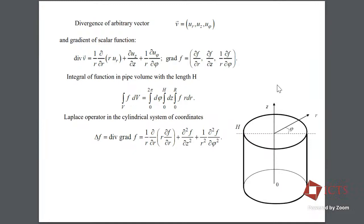U_Z is the displacement in the direction of the z-applicate. U_phi is displacement according to the angle. All further calculations aim to define such displacement. We will define the divergence of an arbitrary displacement vector, then the integral of some functions which can be represented by the gradient of this function, represented in the pipe volume as a volume integral in different parameters.